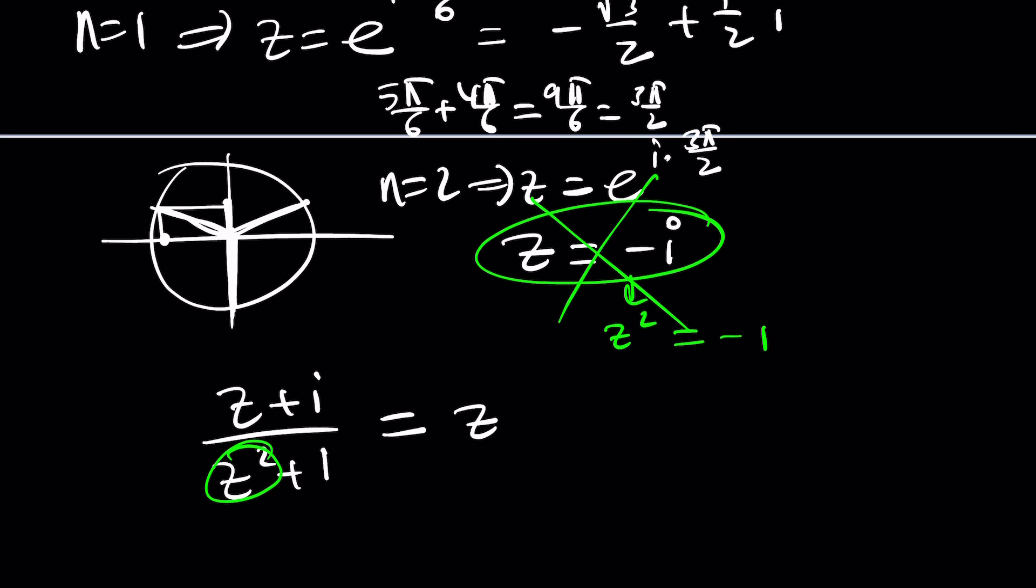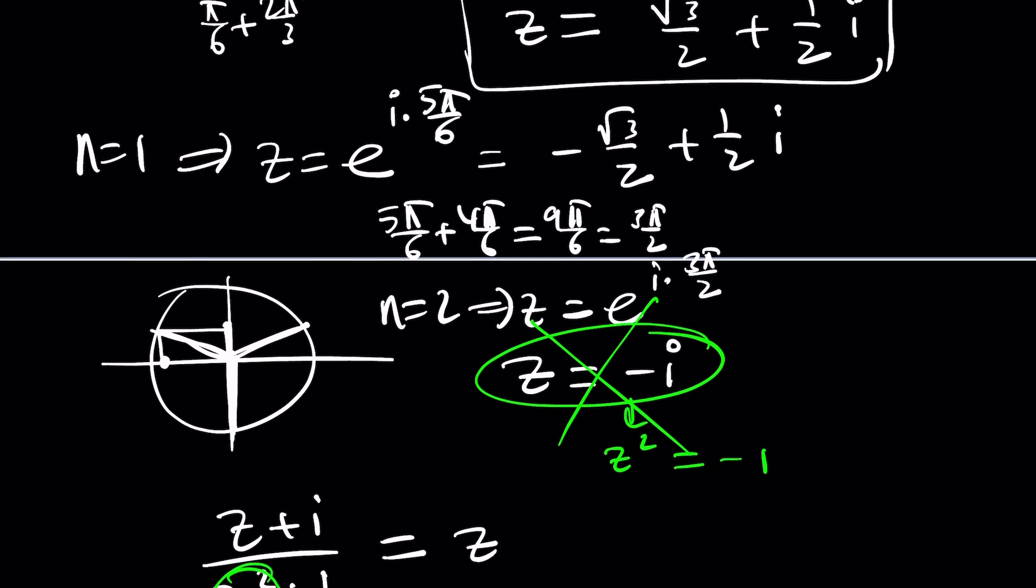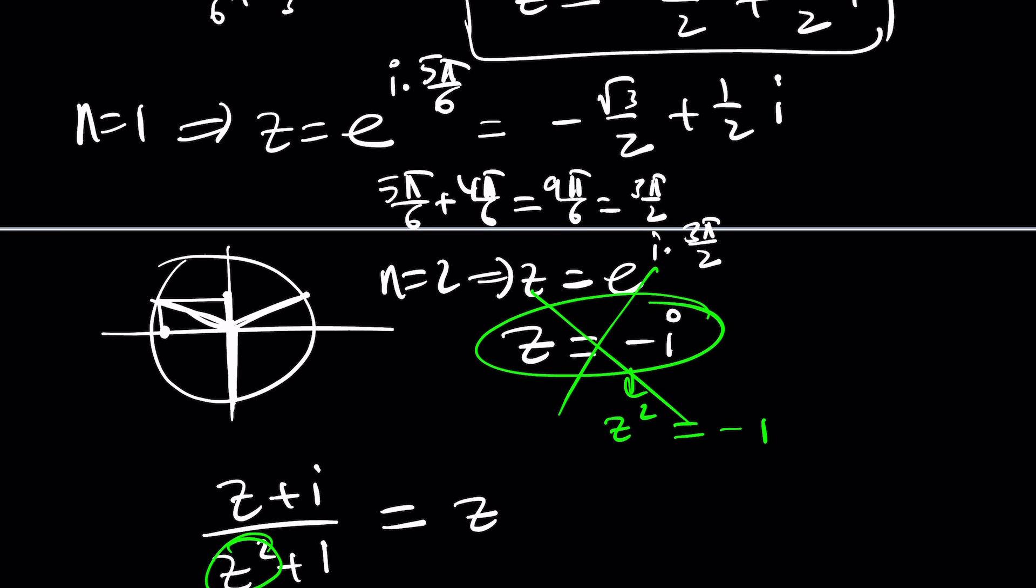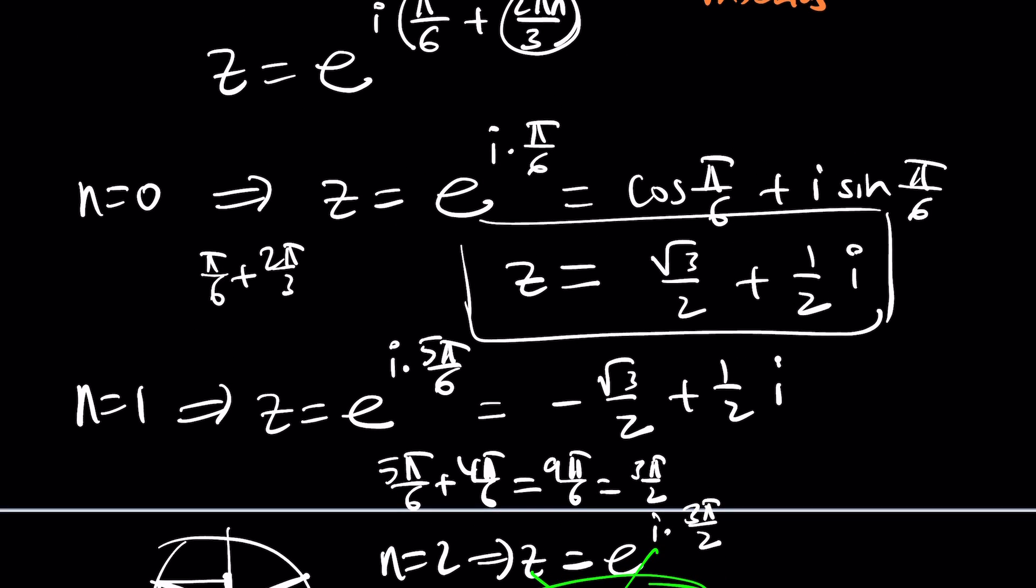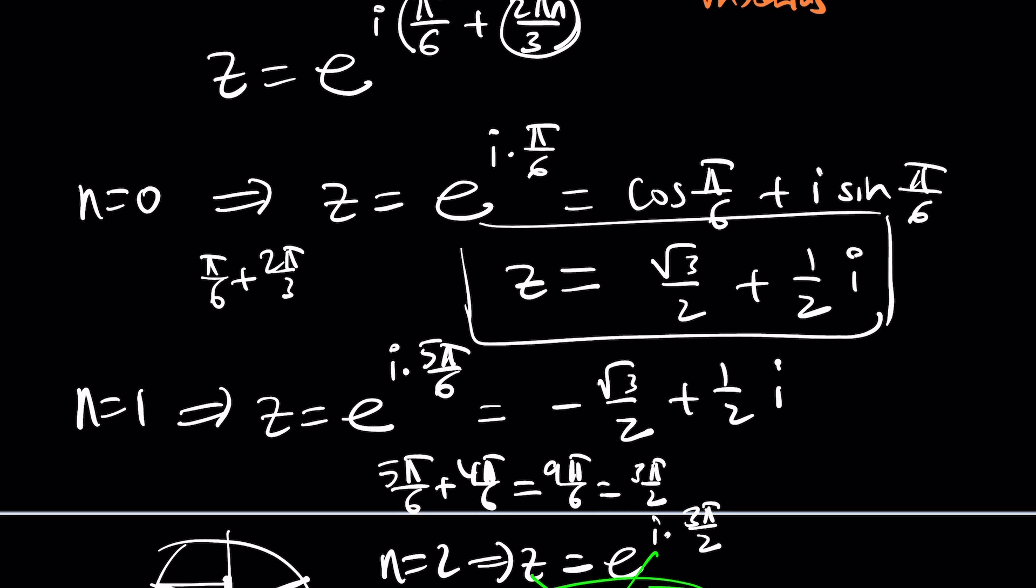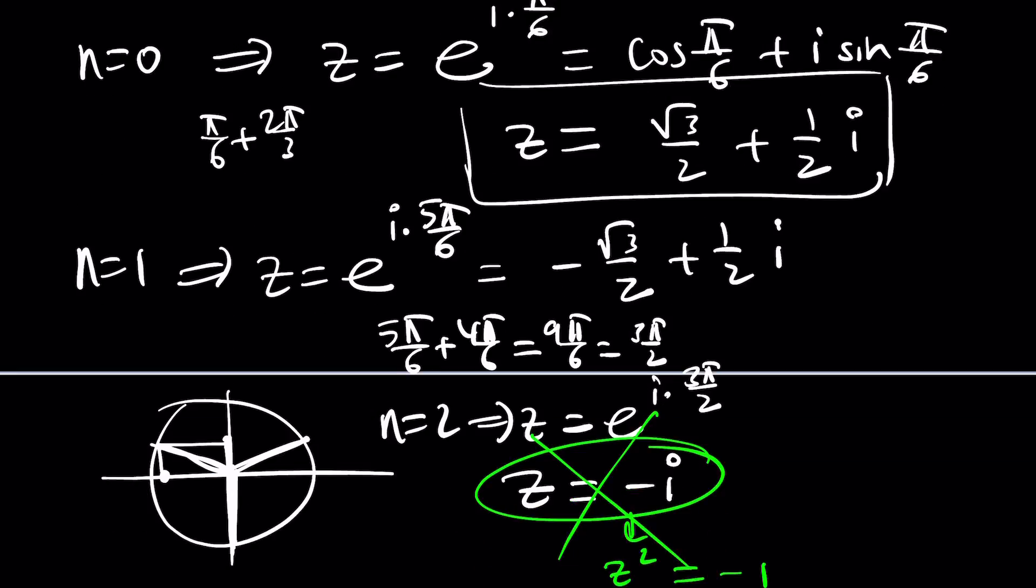What about the other ones? They don't seem to be causing an issue at least for the denominator because when you square them they're not going to become negative one. You get the idea? Because their cube is an integer their square is not. Great, so they should work but if you want to test them out be my guest and do it and let us know what you think.